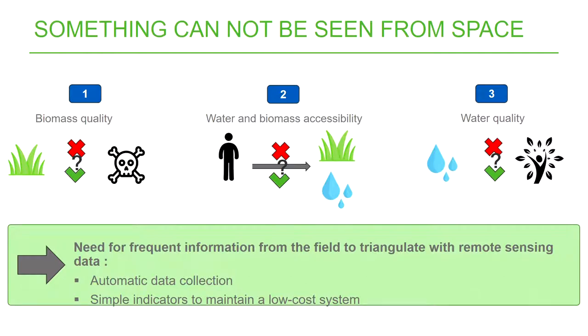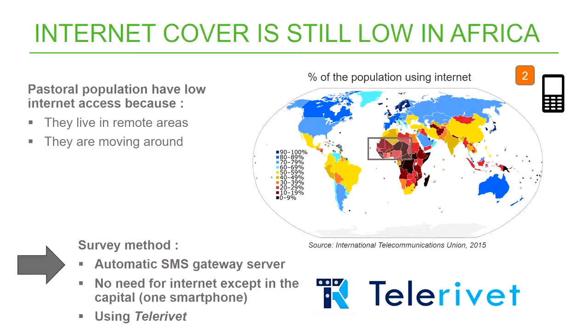When we started to build automatic field data collection, we faced an issue: low internet connectivity in Africa. As shown on the map, the percentage of the population using internet is still quite low in Africa, especially in the remote areas where we work with a mobile population that moves with their animals. So we built a survey method based on an automatic SMS gateway server called Telerivet. This is the only non-open-source software we use — we have to pay for it, but it's not expensive.